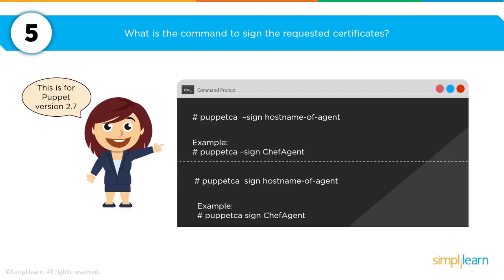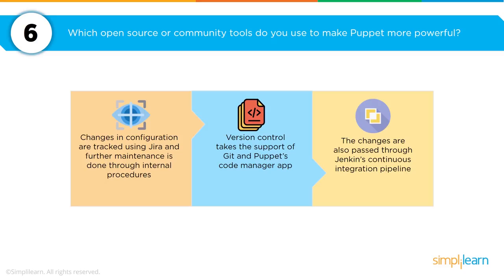When working with Puppet, you may be asked about differences between command lines across versions. For example, the command to sign a requested certificate differs between Puppet version 2.7 and Puppet version 3. This is something to bear in mind during your interview — the tools used within a continuous integration and continuous delivery DevOps model do vary, so you want to speak knowledgeably about different versions.